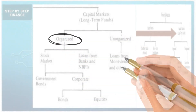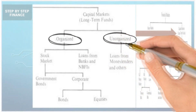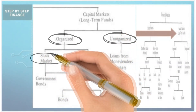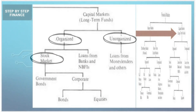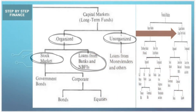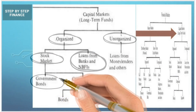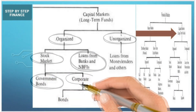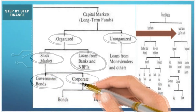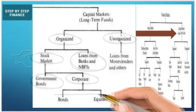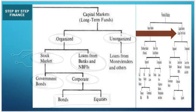Capital markets are of two types: organized and unorganized. Organized markets are of two types: stock market, and loans from banks and NBFCs. Stock markets can again be divided into two types: government bonds and corporates. Corporates can further be divided into bonds and equity.